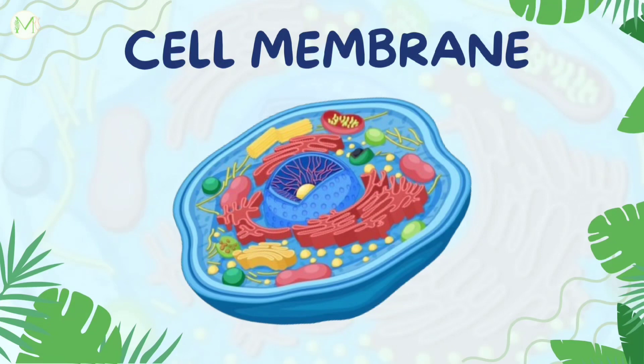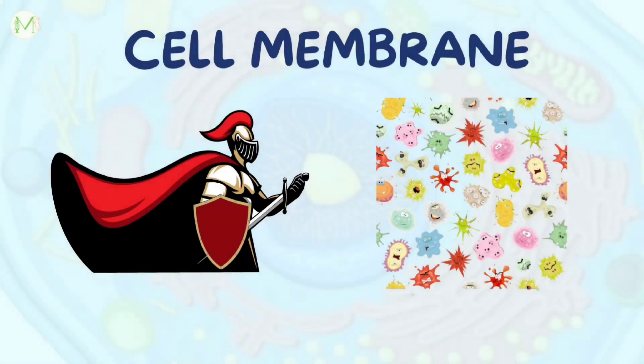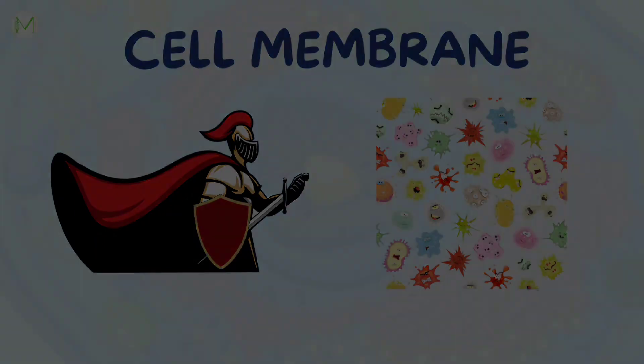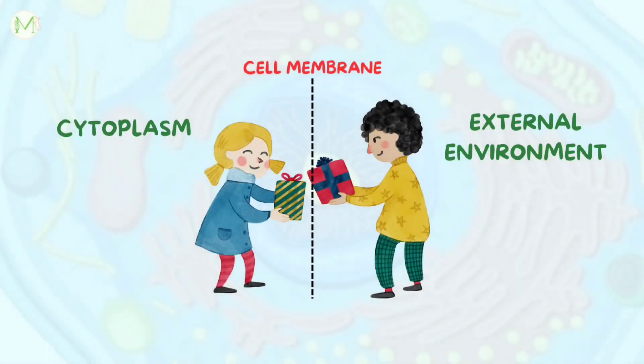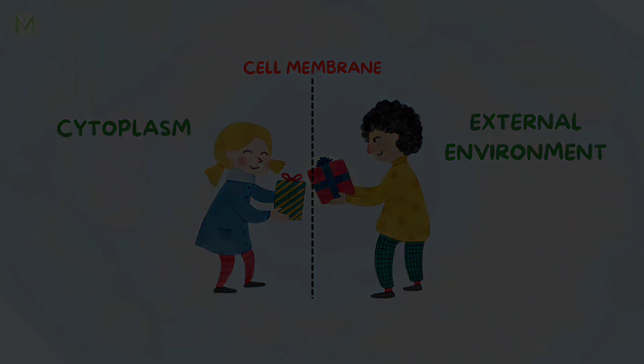Welcome back to MediNair. In this video, let's discuss the cell membrane of the human cell. It is the protective barrier of the cell against foreign bodies or antigens. Materials exchange between cell cytoplasm and external environment occurs through this membrane so that a constant intracellular environment is maintained for proper functioning of the organelles.